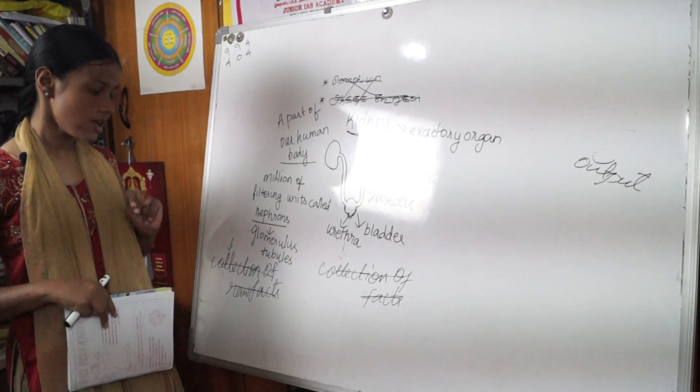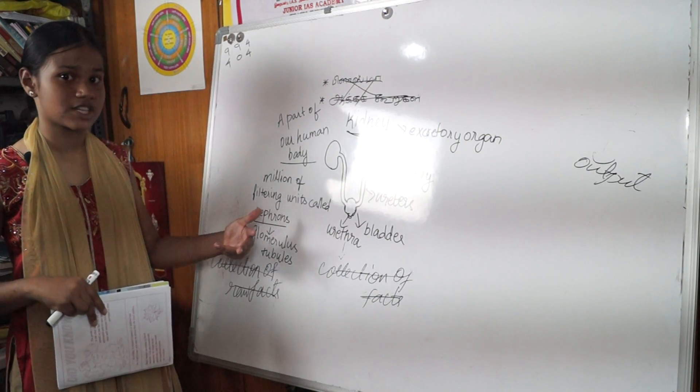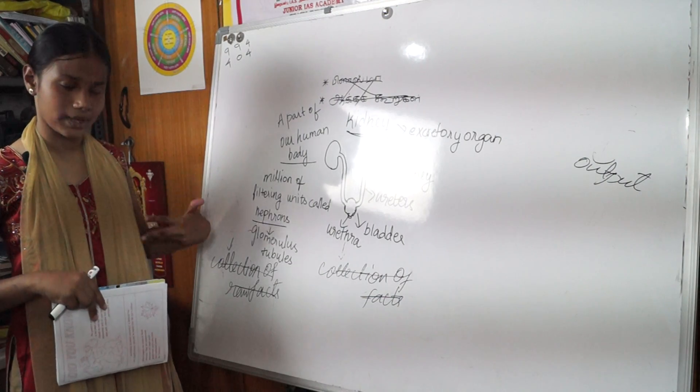Glomerulus filters the blood and tubules return the needed substances to blood and remove the waste.